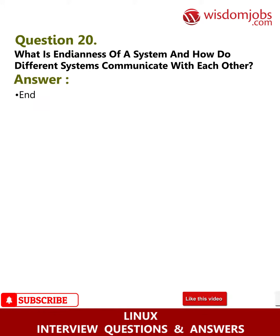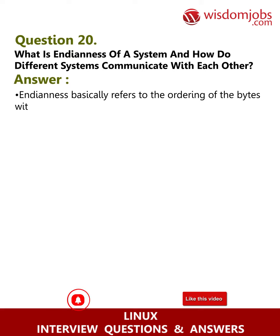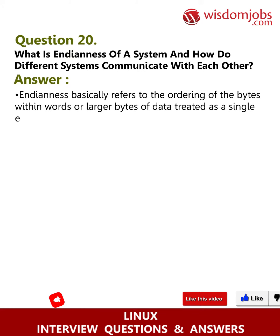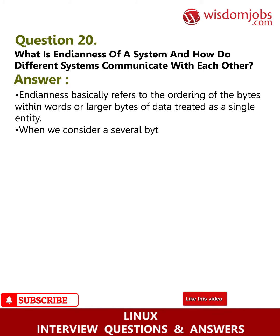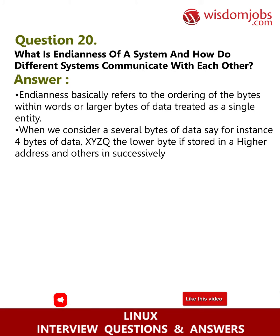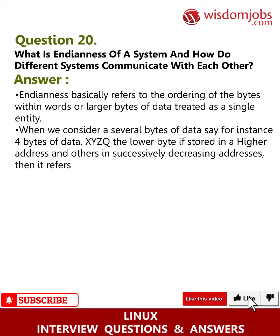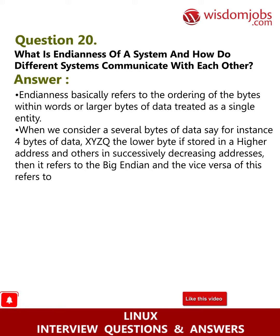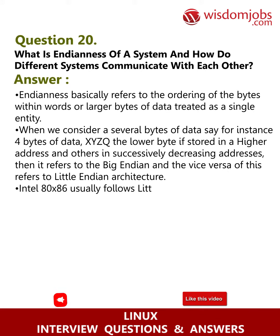Question 20: What is endianness of a system and how do different systems communicate with each other? Answer: Endianness refers to the ordering of bytes within words or larger units of data treated as a single entity. When considering four bytes of data, if the lower byte is stored at a higher address and others at successively decreasing addresses, it refers to big-endian architecture.